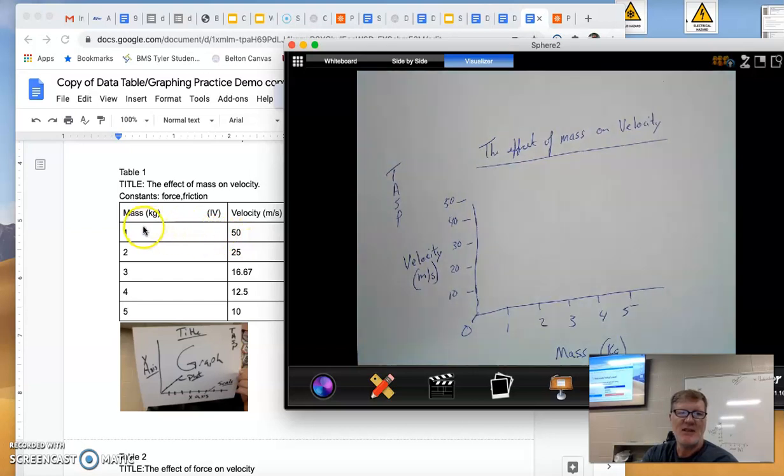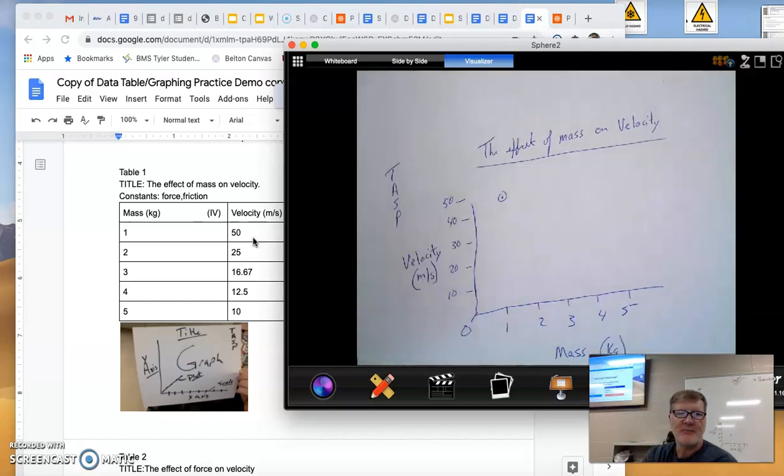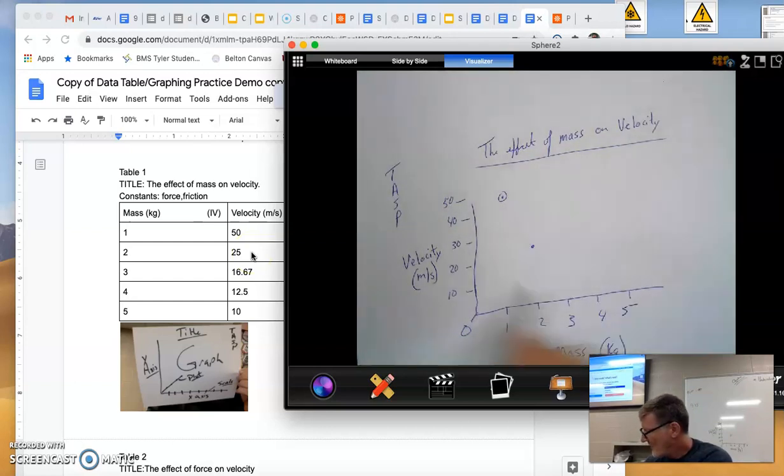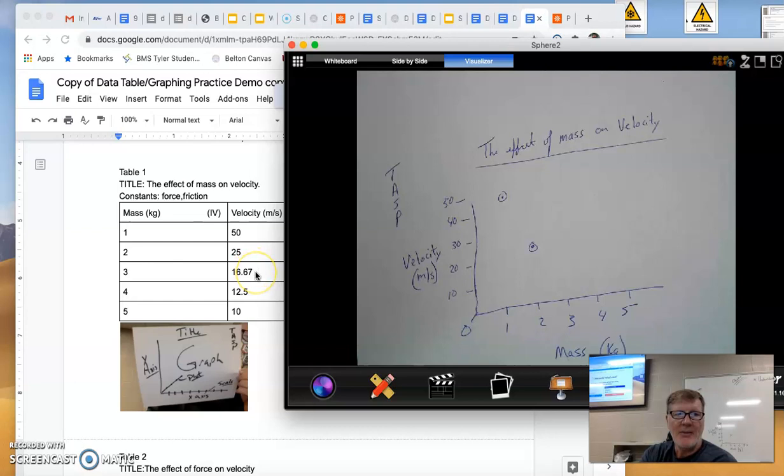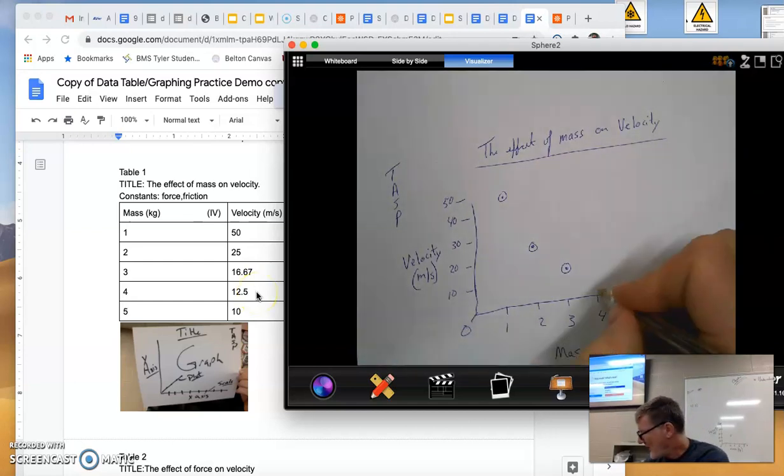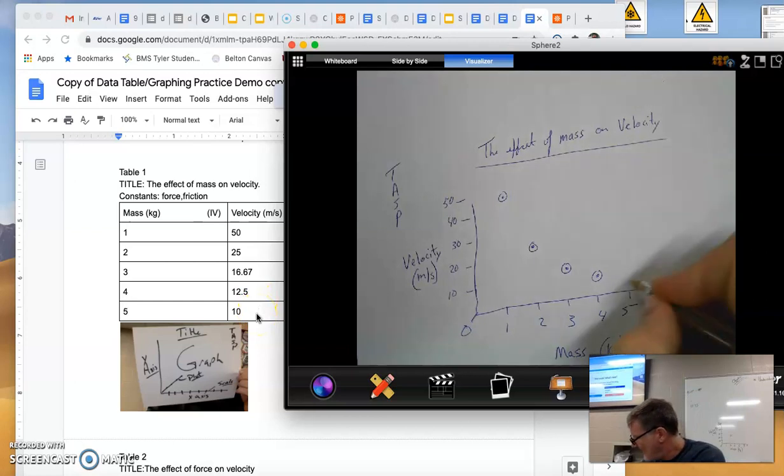Now I just plot this as if this was an x, y coordinate data set in an algebra class at 1 kilogram. I'm going to go to 50 meters per second. Put a dot. At 2 kilograms, I go to 25 meters per second, which is right between 30 and 20. At 3 kilograms, it's 16.7. At 4, we're going to 12.5. And at 5, we're at 10. And I connect my dots.